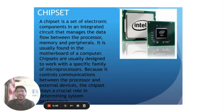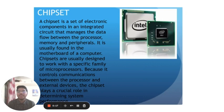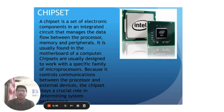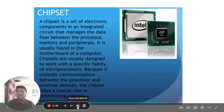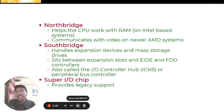A chipset is a set of electronic components in an integrated circuit that manages the data flow between the processor, memory and peripherals. It is usually found on the motherboard of a computer. Chipsets are usually designed to work with a specific family of microprocessors because they control communication between the processor and external devices. The chipset plays an important role in determining system performance. It is a smaller set of chips that has replaced a large number of individual chips, controlling data flow between the CPU, peripherals, bus slots and memory slots, and helping different parts of the computer communicate with the CPU.